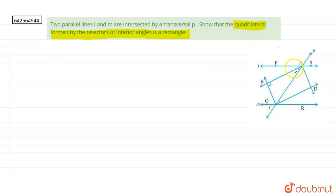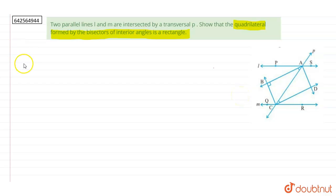A bisector divides the angle into two equal parts. We know a rectangle is a parallelogram with angles at 90 degrees. So first we will prove that it is a parallelogram, and then we will prove that it is a rectangle.